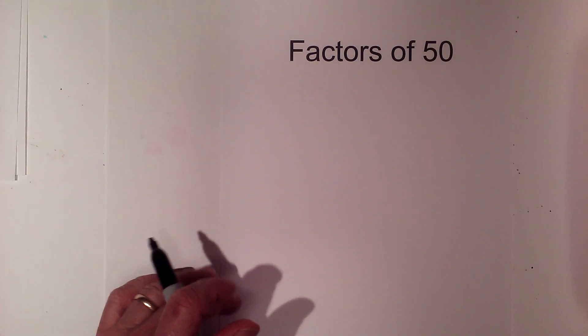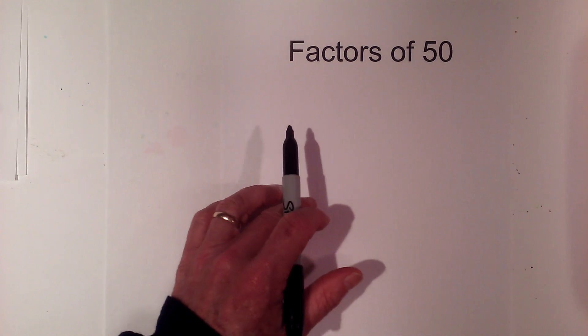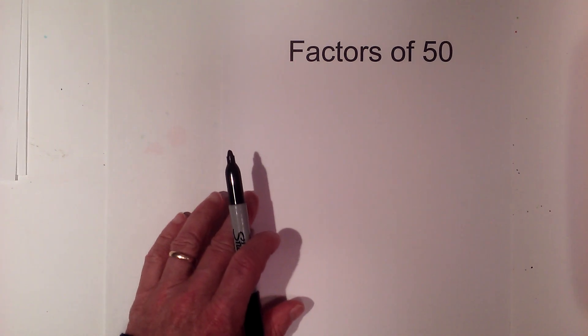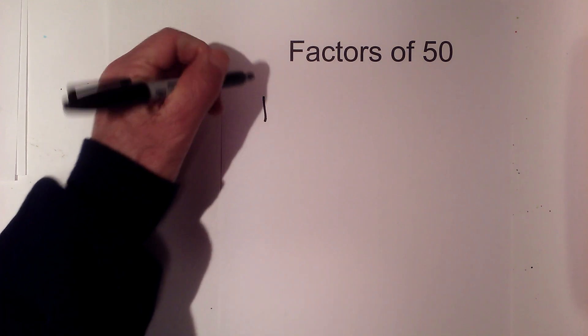In this video let's find the factors of 50. 50 is a composite number, so numbers other than one and itself will divide into it. I like to use this method, it's a modified rainbow method.